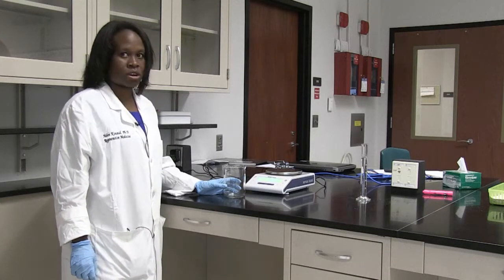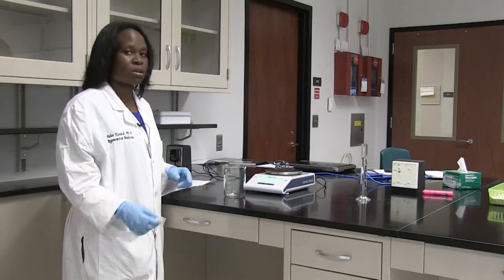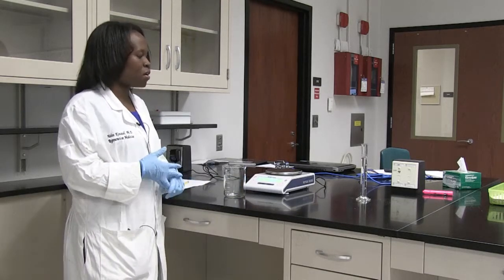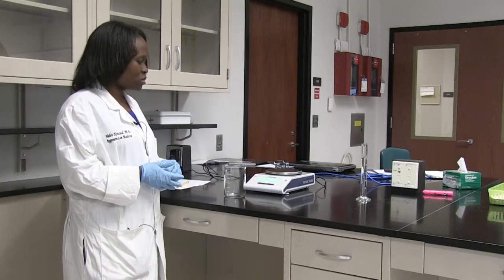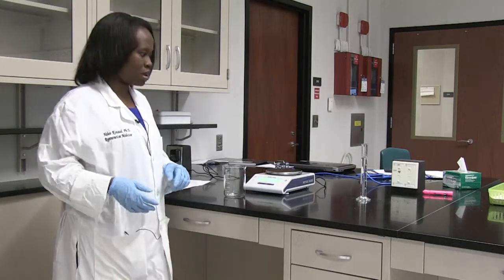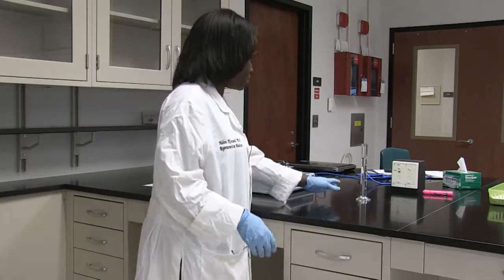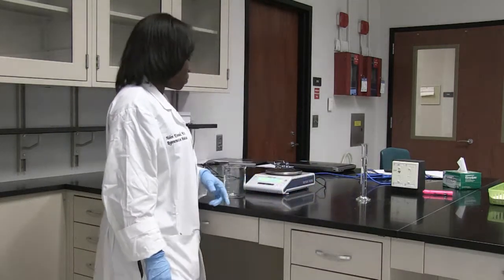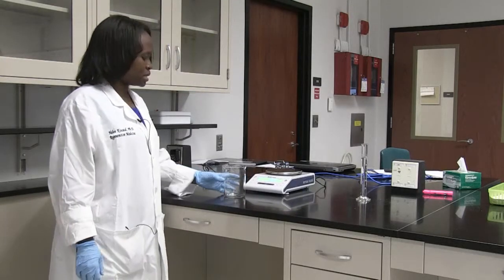In order for us to determine the density of water, we have to determine its weight and its volume. So in order to do this, I'm going to weigh 50 milliliters of water by placing it into a beaker.